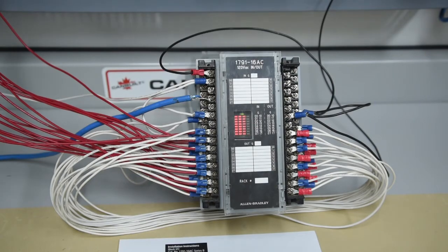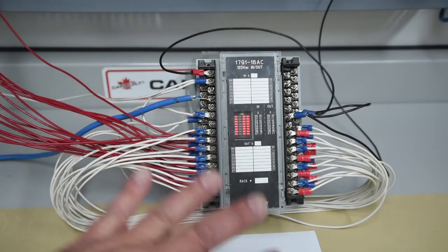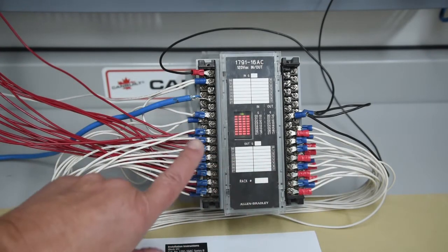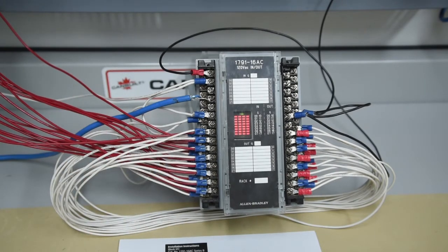Okay, we're back. This is our 16AC block. It's wired up so that the outputs are driving the inputs, which are tied to the pilot lights that we use for our load.